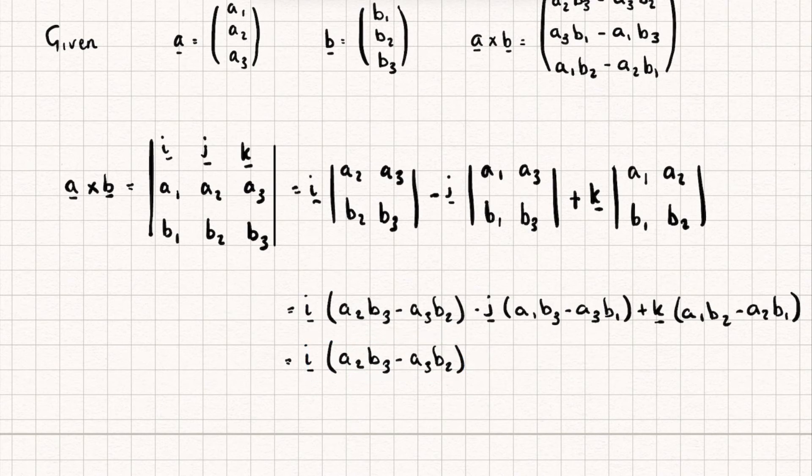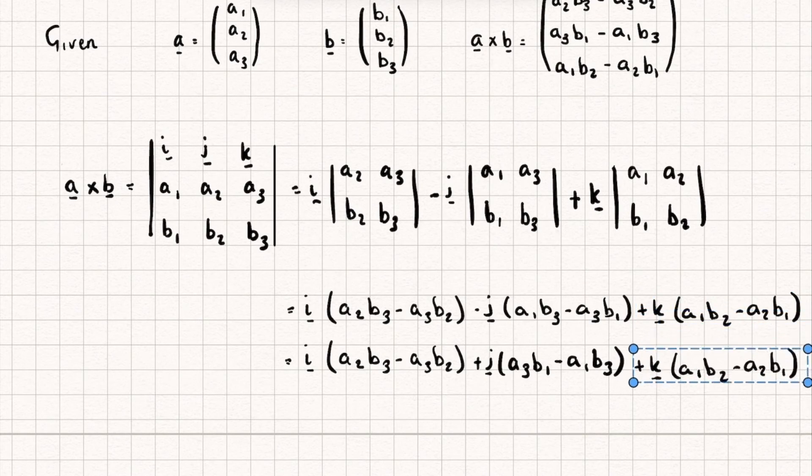I'm then going to distribute this negative inside, so it's going to become plus j multiplied by (a₃b₁ - a₁b₃), and this final term is going to remain exactly the same.